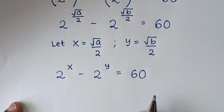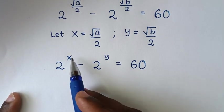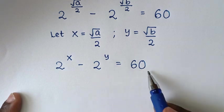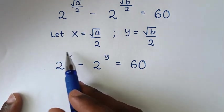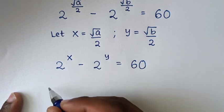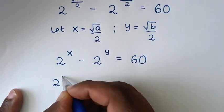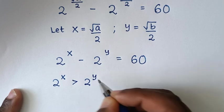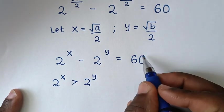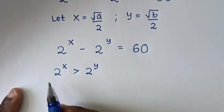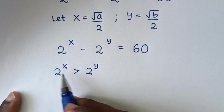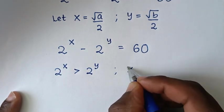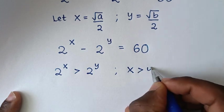Then in the next step, from this exponent minus this exponent giving 60, which is a positive value, this exponent should be greater than that exponent. So 2 power of x should be greater than 2 power of y. Since we have the same base of 2, we'll compare these powers, so x should be greater than y.